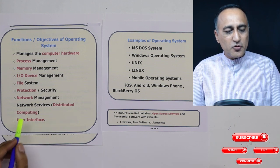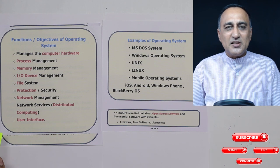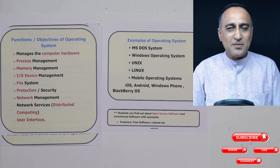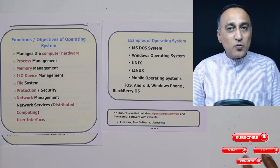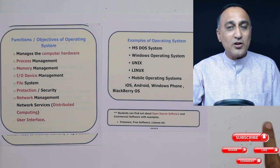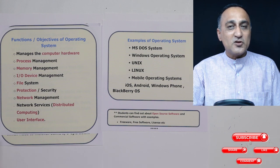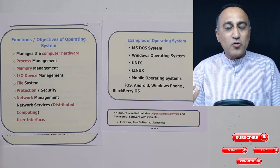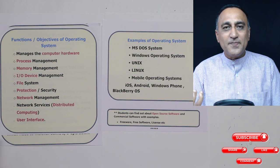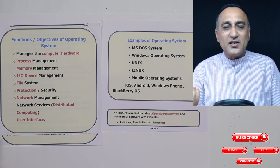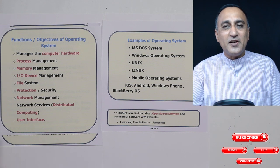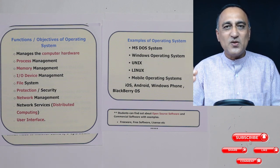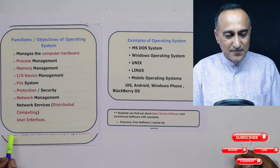In distributed computing, you might have hundreds of machines where some part of work is done on one machine, some on another, and some on a third. You need one single operating system to coordinate the work of all those machines. There are special operating systems called distributed operating systems that run when you have a cluster of machines, helping them work as a team so the user feels they are working on just one machine, even though the work is divided into many components.